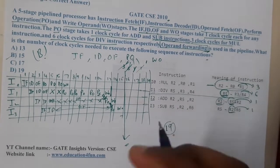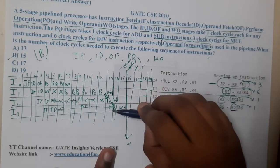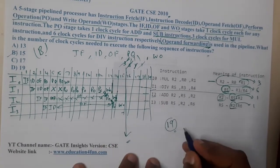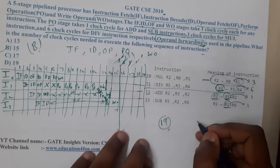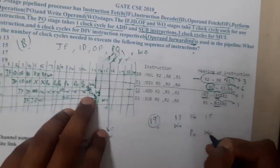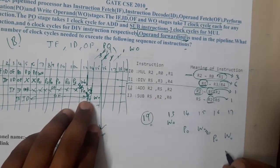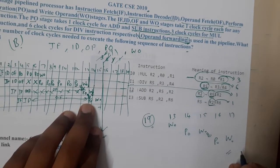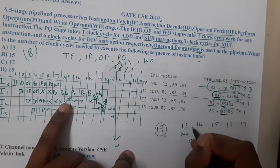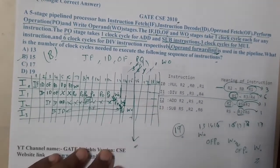Without forwarding, you cannot collect values mid-execution — you must wait until write-back completes. The dependent instructions must wait for the full prior execution to finish. At cycle 13, the write-back of I1 occurs; at 14 the next PO runs; at 15 its WO completes; at 16 the following instruction gets its value, performs PO; then at 17 its WO. But including the operand fetch steps at cycles 14, 15, 16, 17, 18, 19 — it totals 19 clock cycles, since operand fetch is a critical step.